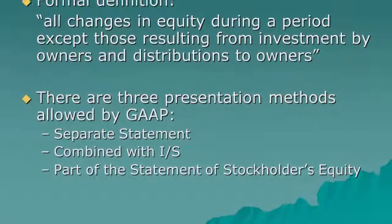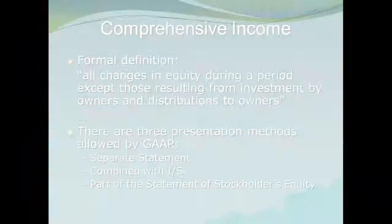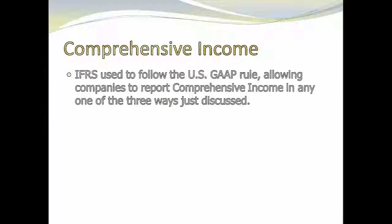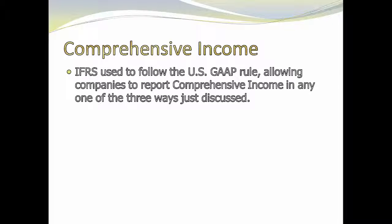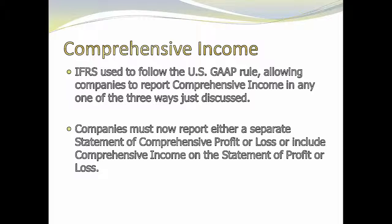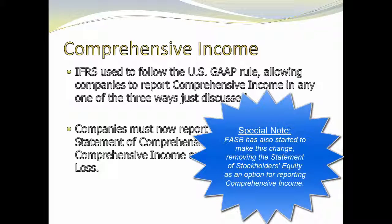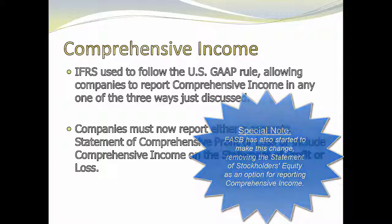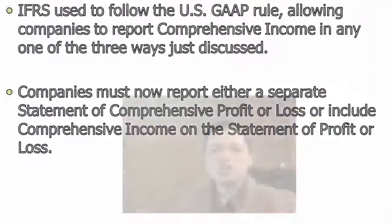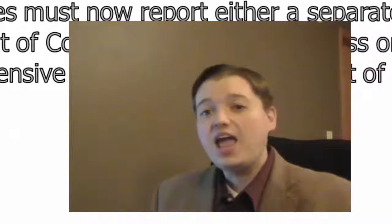Under IFRS there is a slight difference. IFRS started out using the same rules, allowing the same three options, but then they decided they didn't like the fact that companies seem to be hiding this information. So they used the academic research that had been done and got rid of that third option. Under IFRS you can still do it as a separate statement or put it at the bottom of your statement of profit or loss, but it can't go in a statement of stockholders' equity anymore. That wraps up our discussion of both the statement of retained earnings and comprehensive income.